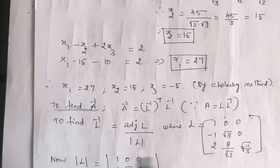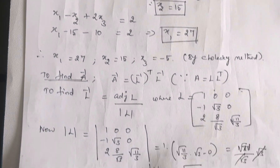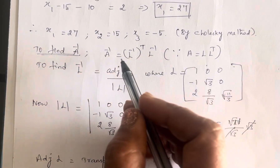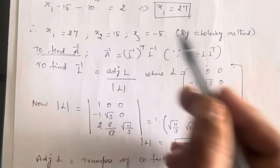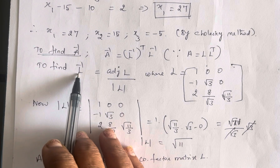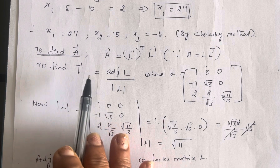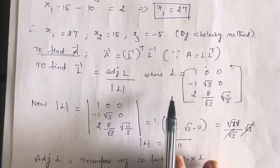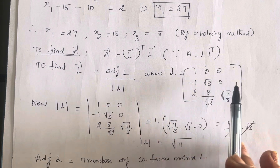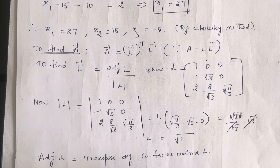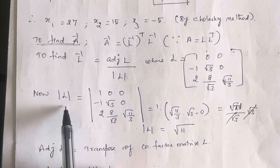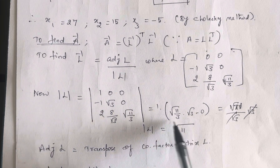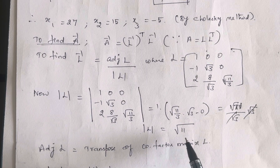For the continuation, we need to find A inverse. Since A = L·L^T, taking the inverse of both sides gives A⁻¹ = (L^T)⁻¹ · L⁻¹ = L^(-T) · L⁻¹. So it is necessary to find L inverse first. L inverse = adj(L) / det(L), where L = [[1, 0, 0], [-1, √3, 0], [2, 8/√3, √(11/3)]].